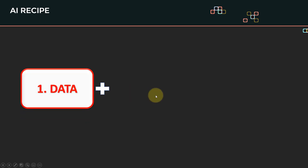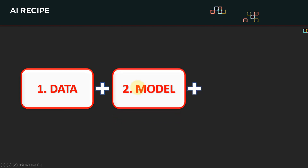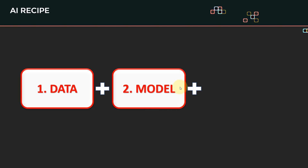The first element is data — we need a ton of data to be able to train AI. The second ingredient is the model, the algorithm. In the next few slides I'm going to do a deep dive on the data and the model. When I say a model, think of it as a mathematical equation — just a bunch of equations fed to a computer that try to mimic the decision-making process in humans.